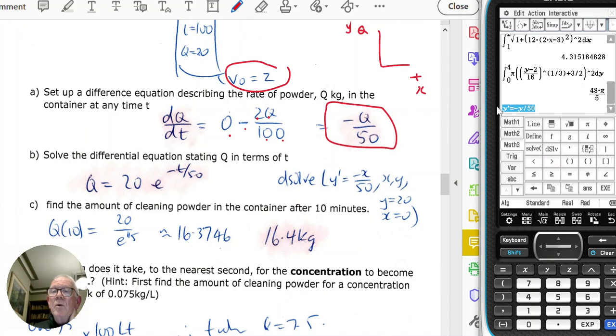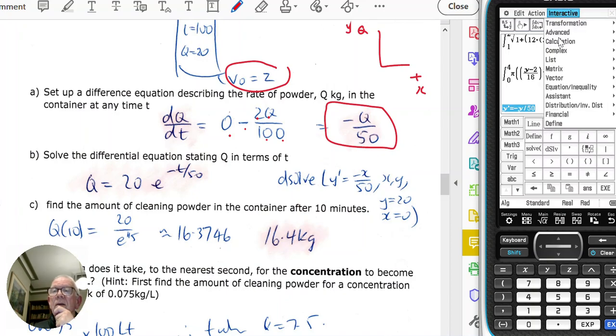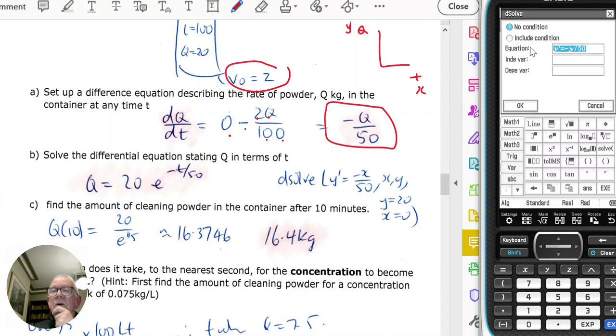And I will go interactive, calculate, D-solve, where my independent variable is X, my dependent variable is Y, and my initial condition is that when X equals 0, I've got 20 kilograms of powder.